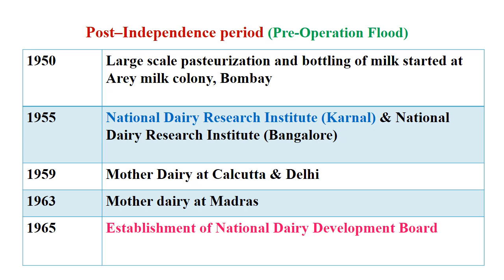So far I was talking about the pre-independence period up to 1946. Then in 1947 we got independence, and here are the new efforts after independence. In the post-independence pre-Operation Flood period, in 1950, large-scale pasteurization and bottling of milk started at Aarey Milk Colony, Bombay — an area where many dairy processing facilities were established. This was the beginning for pasteurization and bottling of milk for organized supply.